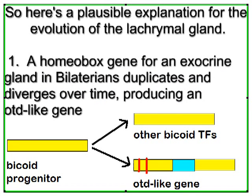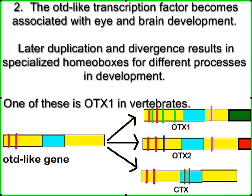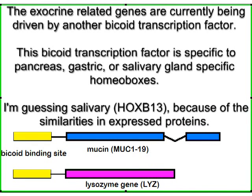So here's a plausible explanation for the evolution of the lacrimal gland. Step 1: a homeobox gene for an exocrine gland in bilaterians duplicates and diverges over time, producing an OT-like gene. The OTD-like transcription factor becomes associated with eye and brain development.